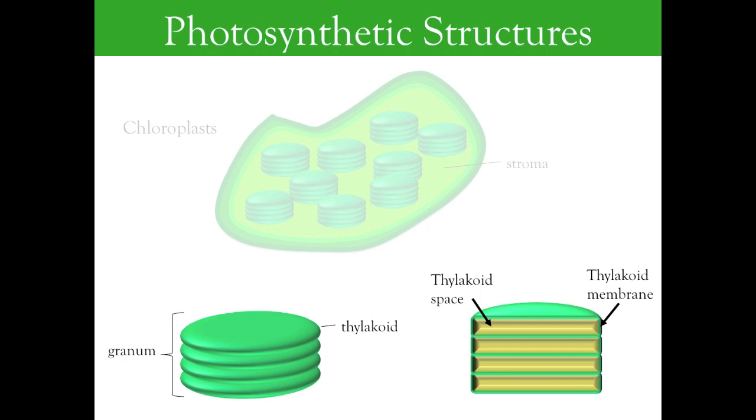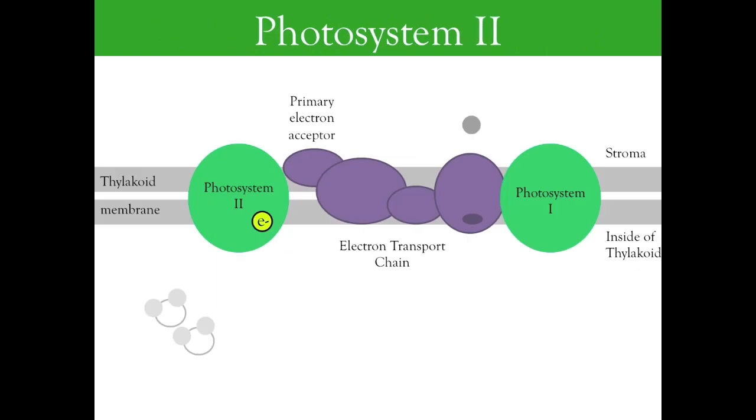The thylakoid membranes of the chloroplast are the sites of the light reactions in photosynthesis. Embedded in the thylakoid membrane are the photosynthetic reaction centers, called photosystems, with associated electron transport chains. As light strikes the first of these photosystems, called photosystem 2, an electron is energized and sent to the primary electron acceptor of the electron transport chain.